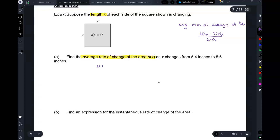So this is going to be A of 5.6 minus A of 5.4 over 5.6 minus 5.4. Now the area is given to us as x squared. So this is going to be 5.6 squared minus 5.4 squared over 0.2. How much is it? 11.